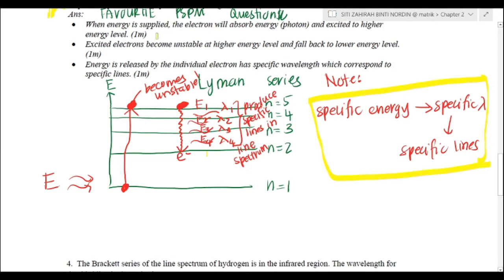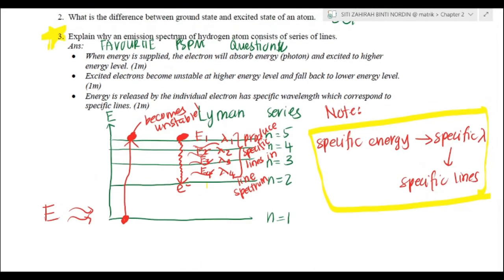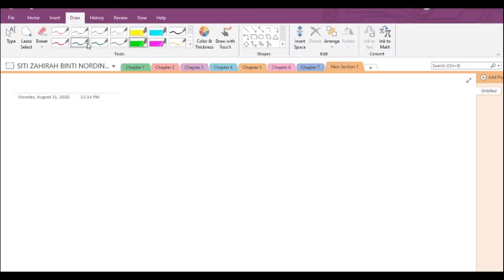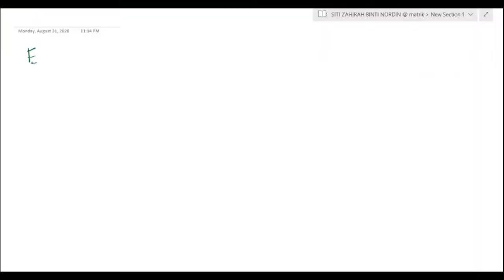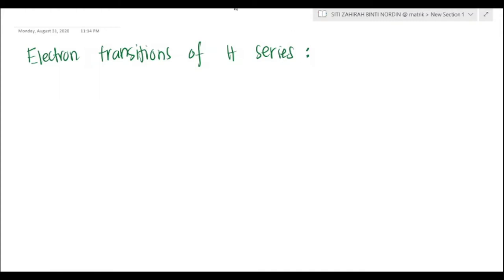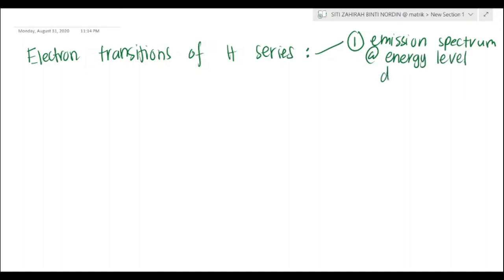Now I will explain the difference between an emission spectrum or energy level diagram and a line spectrum. For the whole of chapter 2 we are only discussing hydrogen series. There are two types: the first is called an emission spectrum or energy level diagram, and the second is called a line spectrum.